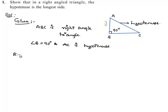We are required to prove that the hypotenuse, that is AC, is the longest side. Now let us move on to the procedure.